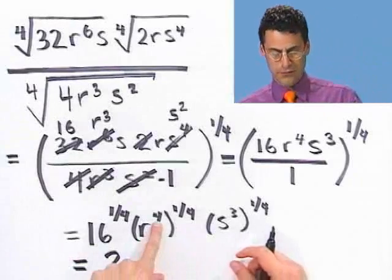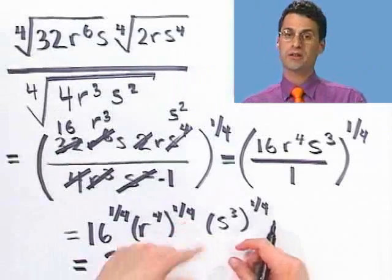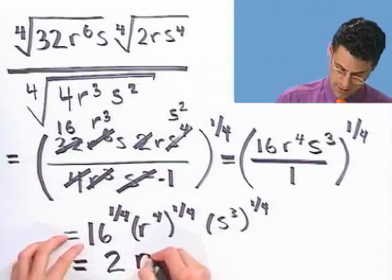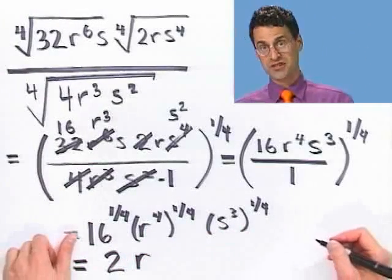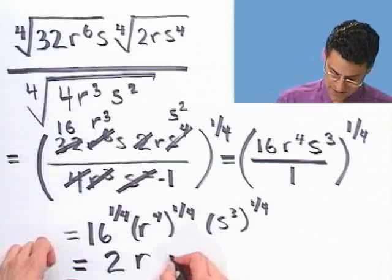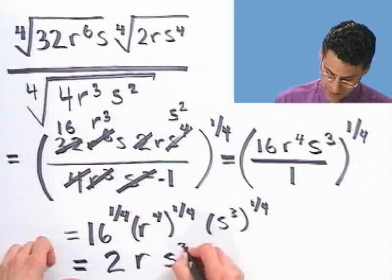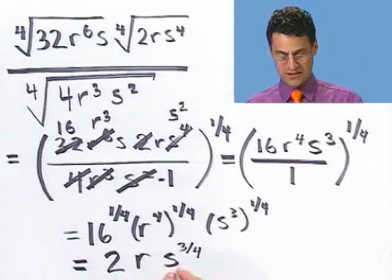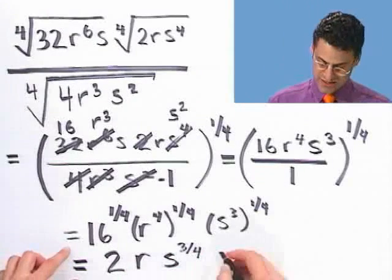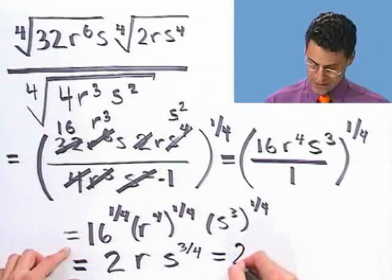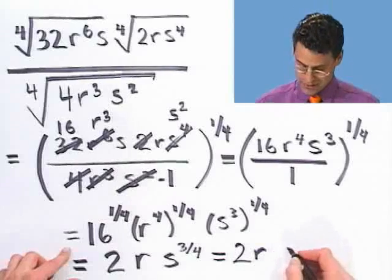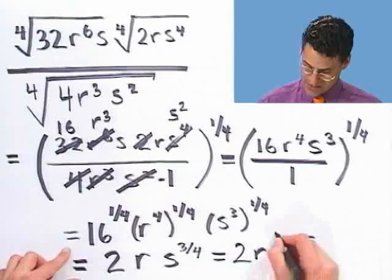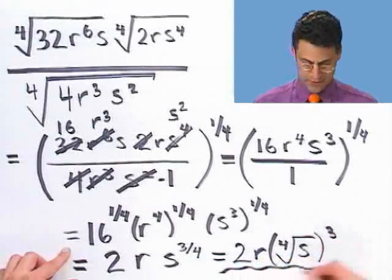For r to the fourth to the one-fourth power, the exponents cancel and you get just r. For s cubed to the one-fourth, that stays as s to the three-fourths power, or equivalently the fourth root of s cubed — either form is fine.